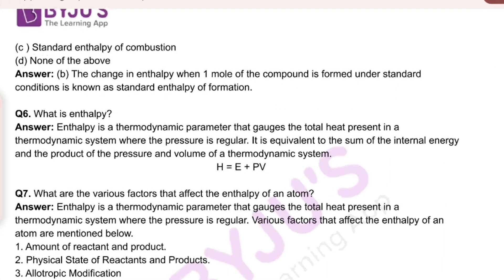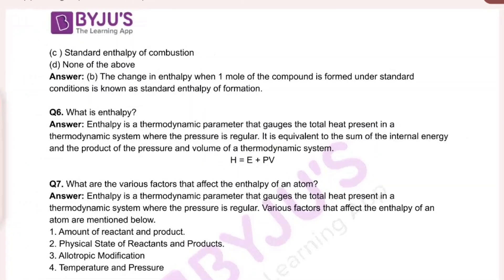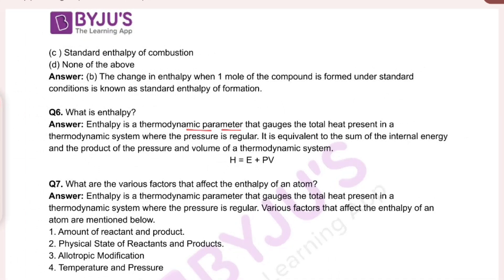We want to know the enthalpy system. By using a PDF, we want to know the enthalpy system. There is a thermodynamic parameter that represents the total heat present in a thermodynamic system at constant pressure. The enthalpy is equal to internal energy E plus PV, which is the sum of the internal energy and the product of pressure and volume of the thermodynamic system.